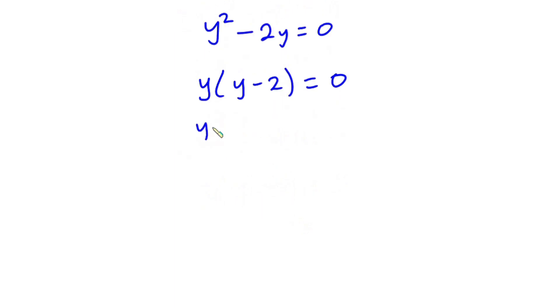Now, at this point, we can say that y is equal to 0 or y minus 2 is equal to 0. So let's make y the subject from this equation. We have y to be 2 and initially we set e to the power x to be equal to y.